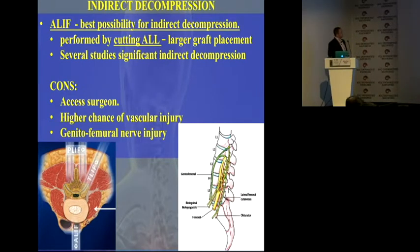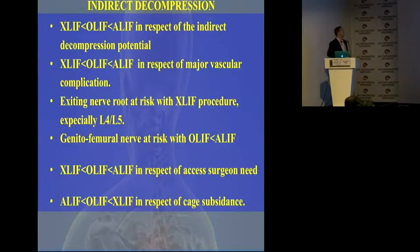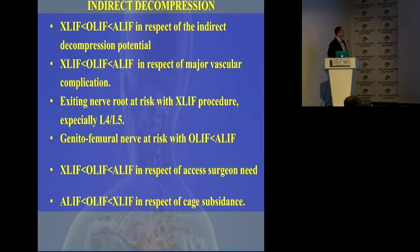Unfortunately, ALIF also has its drawbacks. Most surgeons will need an access surgeon, and in some countries that is mandatory. There is a higher chance of vascular injury and a higher chance of nerve injury. To conclude: ALIF is superior to OLIF, and OLIF is superior to XLIF with respect to indirect decompression. However, ALIF is also superior with respect to vascular complications. The exiting nerve root is at risk with XLIF — especially at L4-L5 — while the genitofemoral nerve is more at risk with ALIF and OLIF. For cage subsidence, XLIF is the best option.